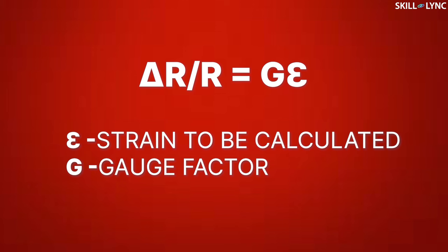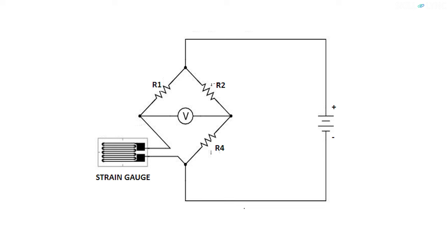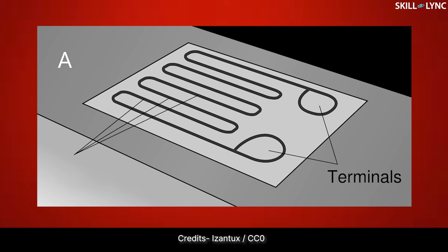Gauge factor is defined as the ratio of relative change in electrical resistance to mechanical strain. In real life, the change in resistance is small and can only be measured with the help of a Wheatstone bridge. The Wheatstone bridge has four arms with one resistor on each arm. The resistor in one of the arms is replaced with a strain gauge. A change in resistance will lead to a change in voltage, and hence the strain will be calculated.